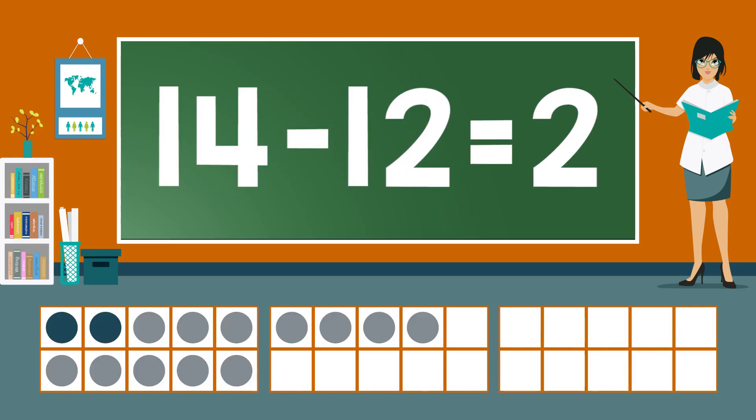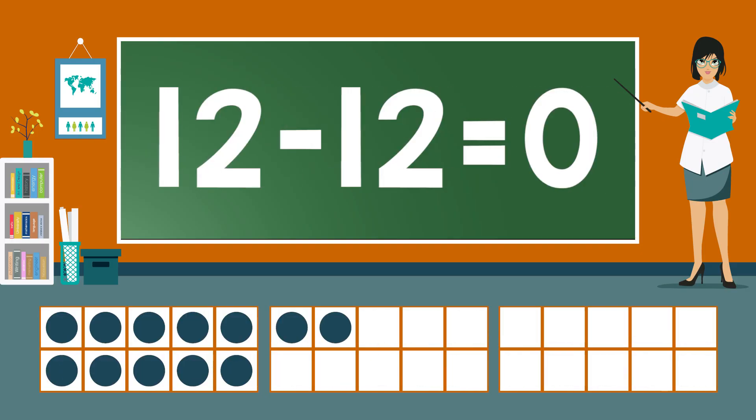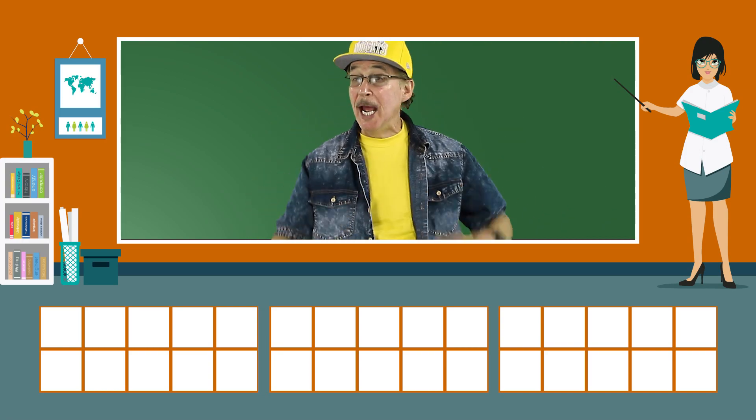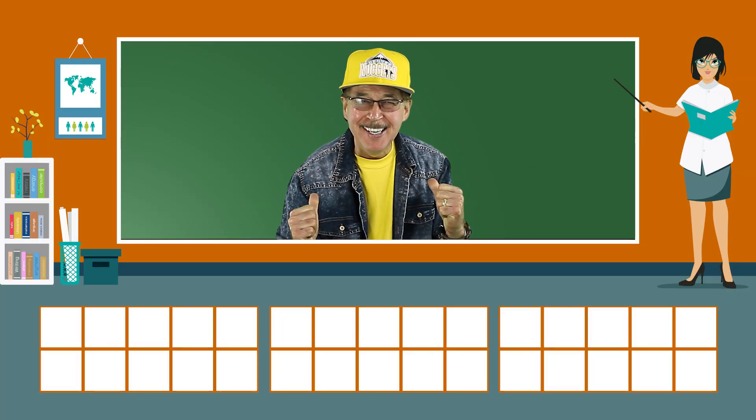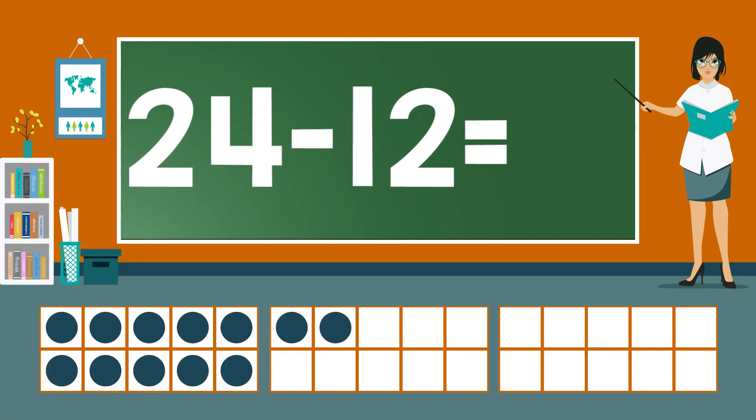14 minus 12 equals 2. 13 minus 12 equals 1. 12 minus 12 equals 0. Practice our subtraction facts. Now you answer before me.